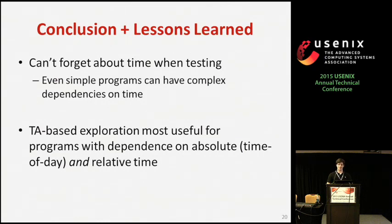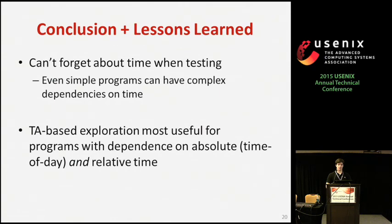In conclusion, some lessons learned: even simple programs can have complex dependencies on time, and finding these bugs isn't necessarily easy — it's sometimes a trial and error process of encountering unintended behavior and then having to update a script. We also found that considering time when model checking is especially useful for programs with dependencies on absolute and relative time, while programs with shallower dependencies benefited less from this type of exploration.